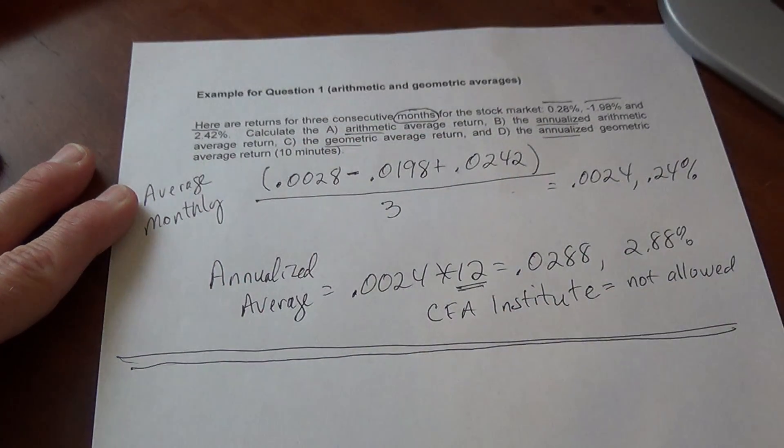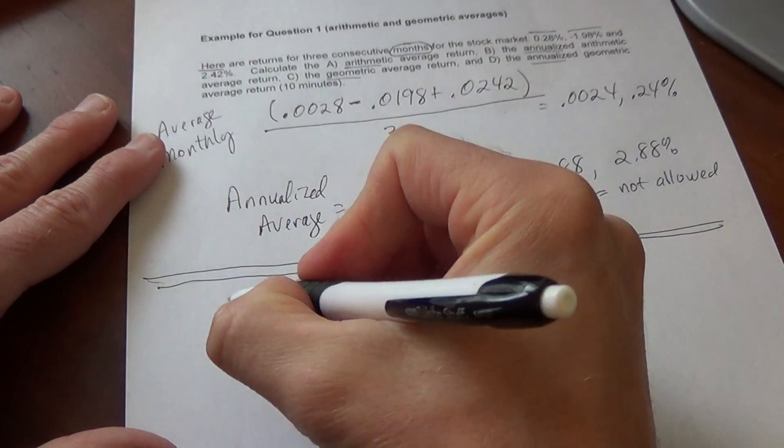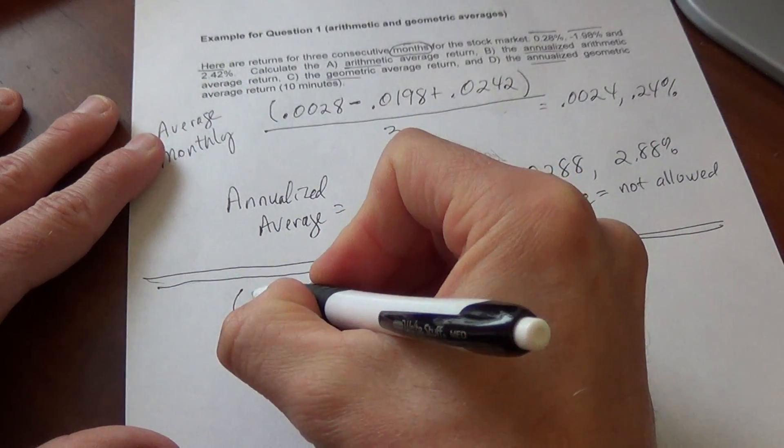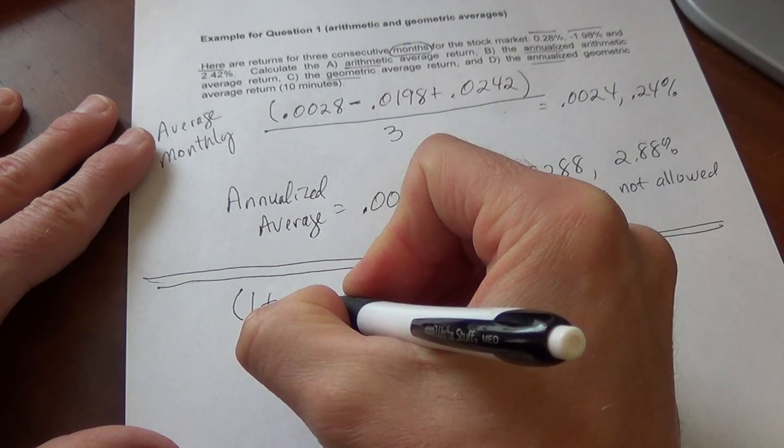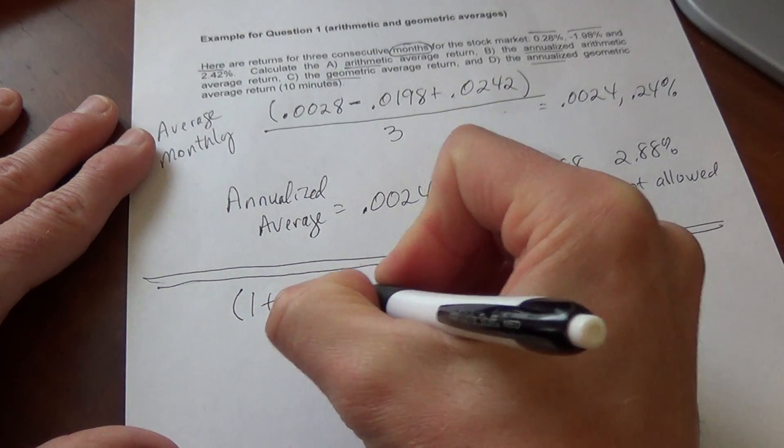The geometric average is a little bit more work, but it's not too bad. For the geometric average, we're going to take each monthly's return, and we'll take one plus each return. Here it's extremely important that you convert to decimals. So it's plus 0.0028.